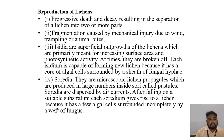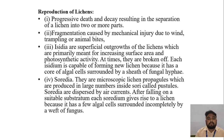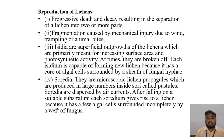Reproduction of lichens: Fragmentation is the progressive death and decay resulting in the separation of a lichen into two or more parts, caused by mechanical injury due to wind, trampling or animal bites. Isidia are superficial outgrowths of the lichen primarily meant for increasing surface area and photosynthetic activity; at times they are broken off, and each isidium is capable of forming a new lichen because it has a core of algal cells surrounded by a sheath of fungal hyphae. Soredia are microscopic lichen propagules produced in large numbers inside sori called pustules; they are dispersed by air currents and give rise to new lichens, as each soredium has a few algal cells surrounded incompletely by a weft of fungus.